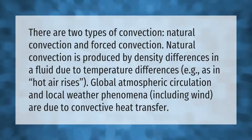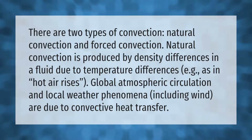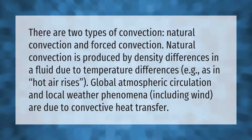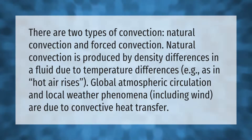There are two types of convection: natural convection and forced convection. Natural convection is produced by density differences in a fluid due to temperature differences — for example, hot air rises. Global atmospheric circulation and local weather phenomena including wind are due to convective heat transfer.